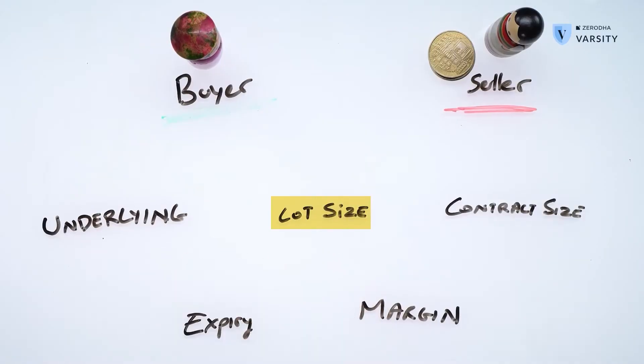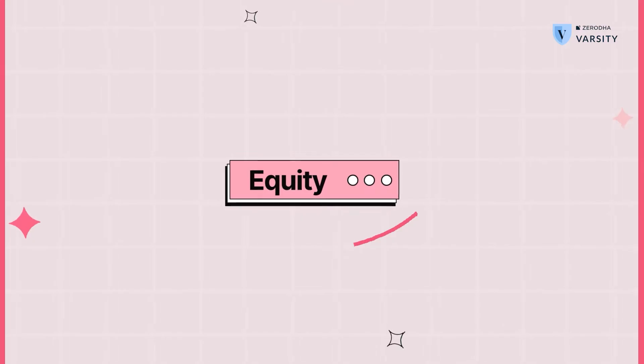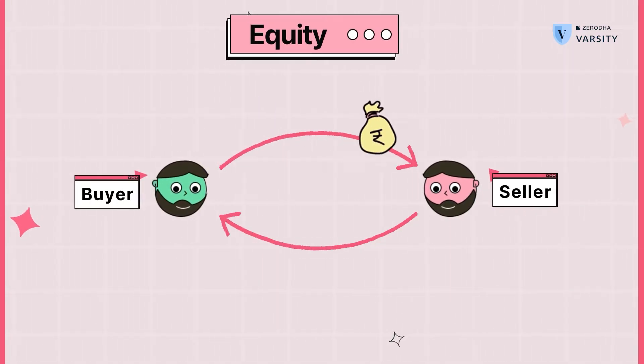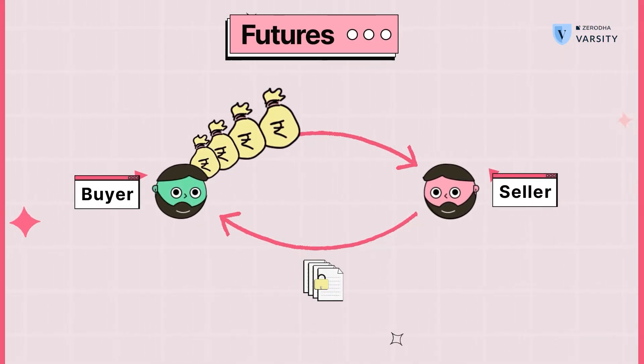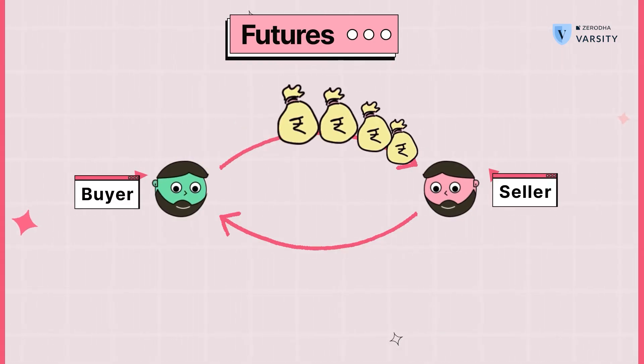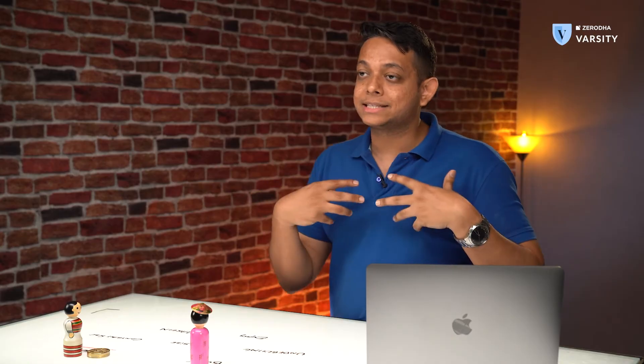Then we have lot size. Lot size is the minimum amount of shares you can trade. In equities, you could exchange any number of shares, but in futures the contract is locked at certain standards. The lot size is the minimum quantity you trade the underlying on the futures contract. For example, if you're trading gold, it could be in minimum grams or kilograms. If you're trading equity, it could be 50 shares of XYZ company — that forms the minimum lot size when trading futures.